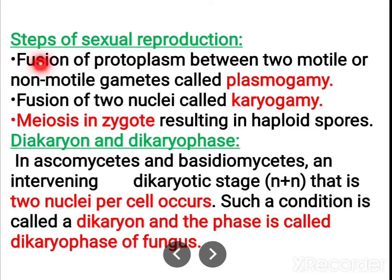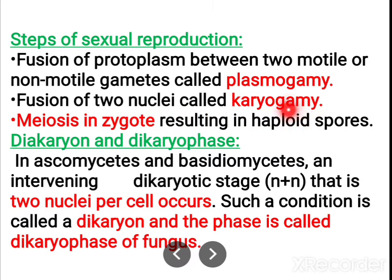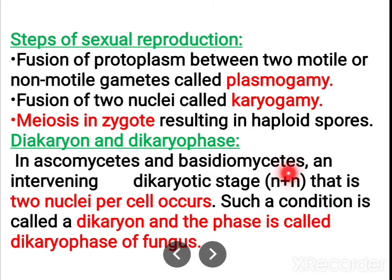The steps in sexual reproduction: the spores formed later fuse. When they fuse, first plasmogamy occurs — the fusion of cytoplasm — and later the fusion of nuclei, which is called karyogamy. After fusion of nuclei it results in the formation of a zygote, and the zygote undergoes meiosis and results in haploid spores. Sometimes the dikaryotic or dikaryophase can be seen in fungi.